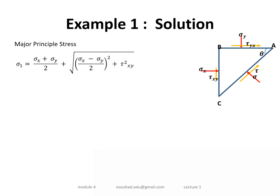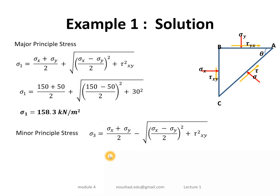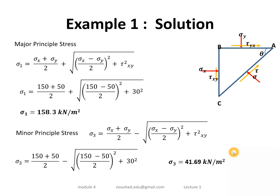Using the principal stress formula with sigma_x and sigma_y values, we get sigma_1 equal to 158.3 kN/m² and sigma_3 equal to 41.69 kN/m².